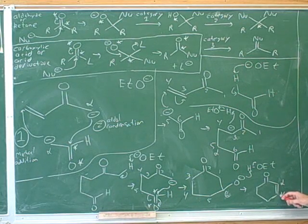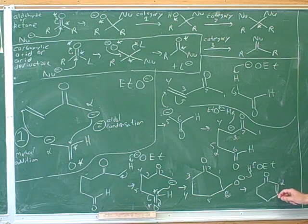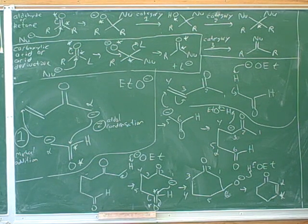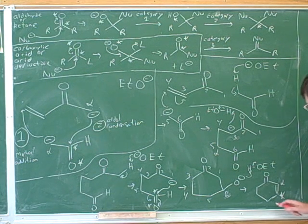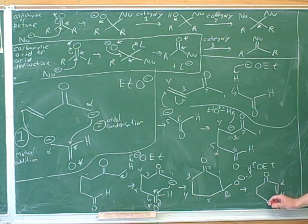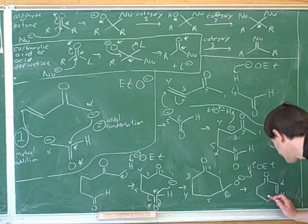Something very useful here is to also label. Here's the alpha carbon that attacked this former carbonyl. What was the other alpha carbon that was doing the attack? Where's the other alpha carbon that did the first Michael addition? That must be this right here, because this used to be the carbonyl, so this must have been the alpha carbon that did the Michael addition.